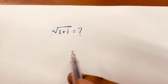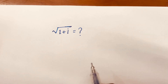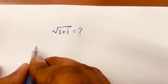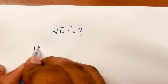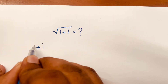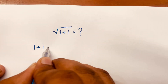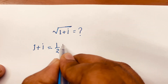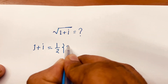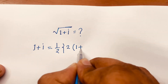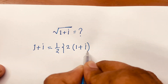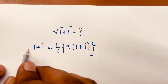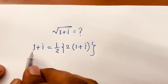How to solve square root of 1 plus i? So, I take 1 plus i, it will be 1 over 2 times 2 times 1 plus i. Look, the 2 cancels, and we find 1 plus i again.